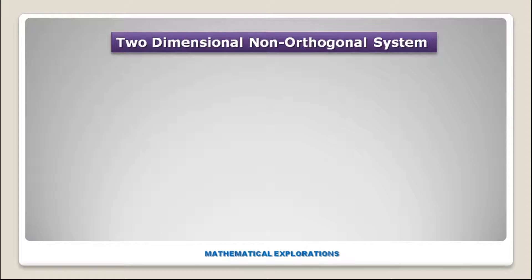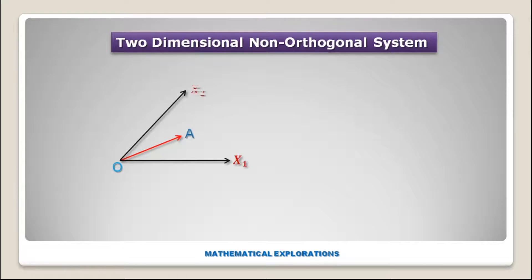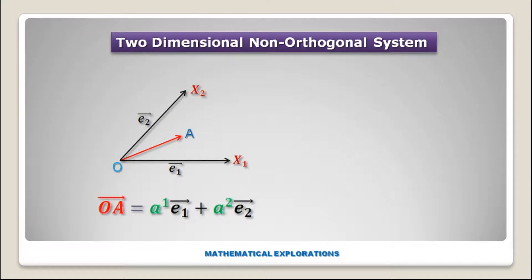Now let us consider a two-dimensional non-orthogonal coordinate system. Orthogonal means the angle between coordinate axes is 90 degrees; non-orthogonal means the angle is not 90 degrees. Let us consider the non-orthogonal O-X1-X2 system and a vector OA. The basis vector along OX1 is E1 and along OX2 is E2, so the vector OA can be written as A¹·E1 plus A²·E2.